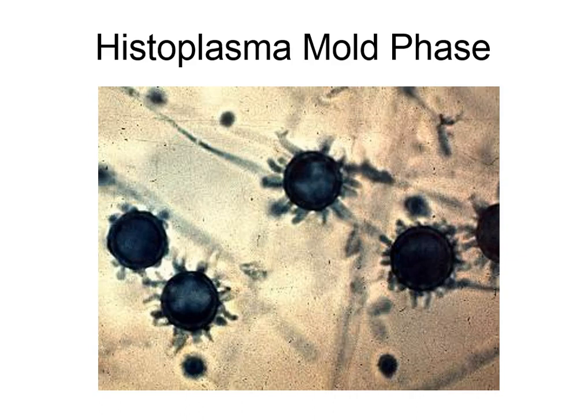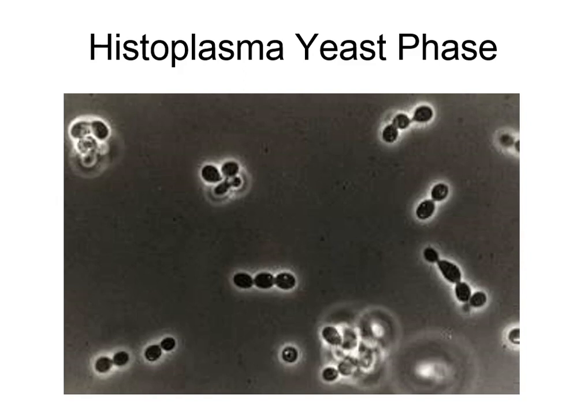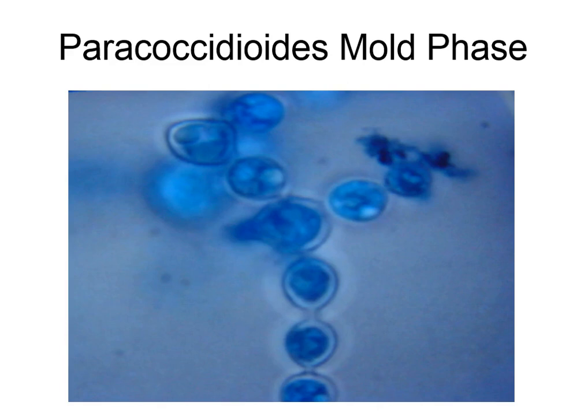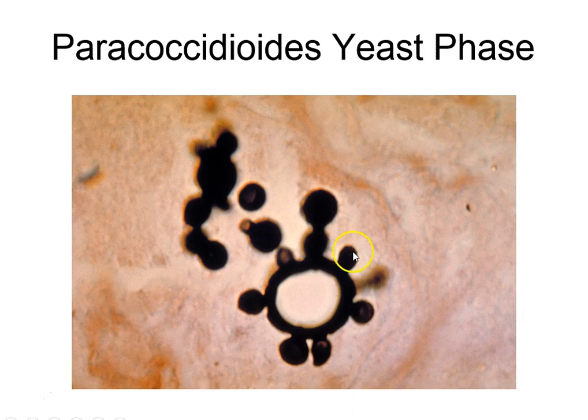Histoplasma has conidiophores at 90-degree angles with small conidia that all look like yeast. It comes from bird droppings including chicken and bat guano; wind spreads it. Patients inhale it and it can spread systemically, especially in AIDS patients. Paracoccidioides looks like a strand of pearls or a mariner's wheel (ship's wheel), with small daughter cells. It's caused by trauma from chewing contaminated vegetable matter.